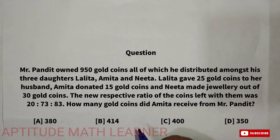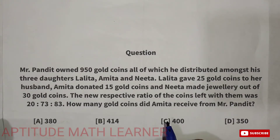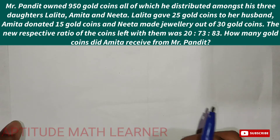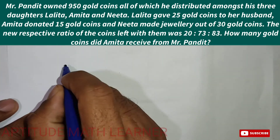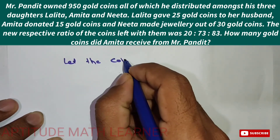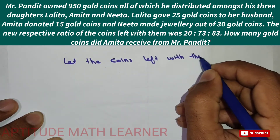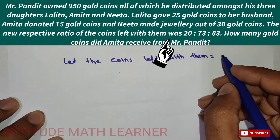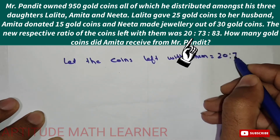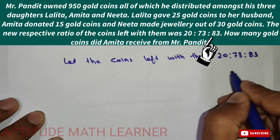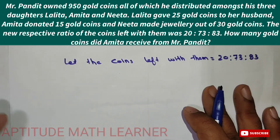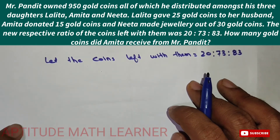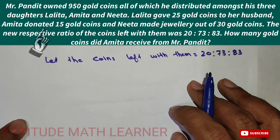How many gold coins did Amita receive from Mr. Pandit? We need to find the number of coins received by Amita from Mr. Pandit. First, we let the coins left with Lalitha, Amita, and Nita be in the ratio 20:73:83 — this is the ratio of coins remaining after each daughter gave away or used some coins.